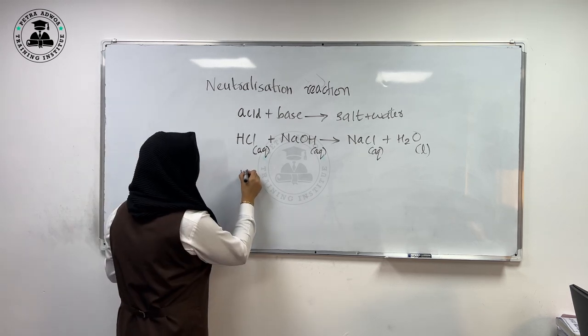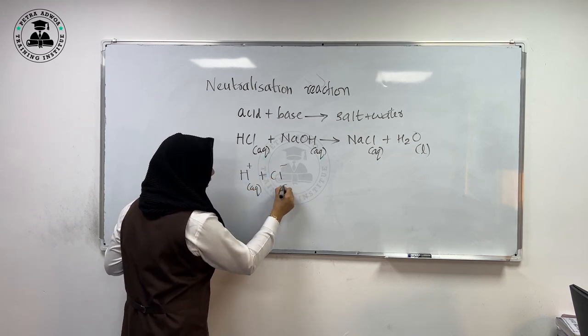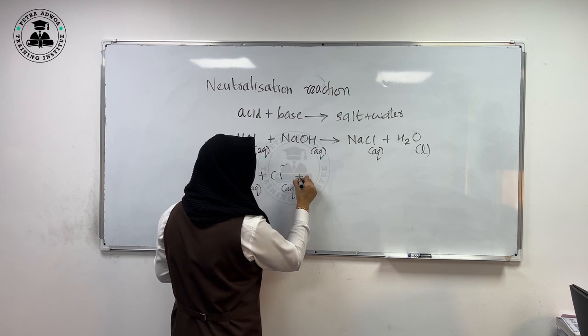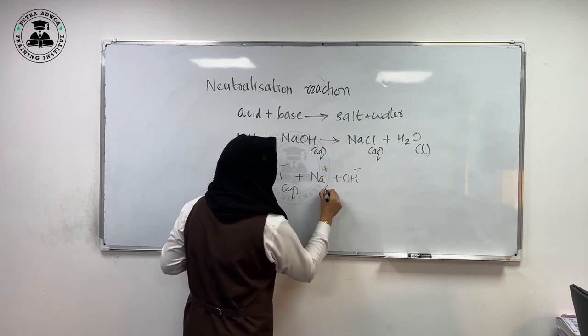So HCl will be splitting as H plus and Cl minus ions in aqueous solution. And for sodium hydroxide, it will be splitting into Na plus and OH minus ions in aqueous solution.